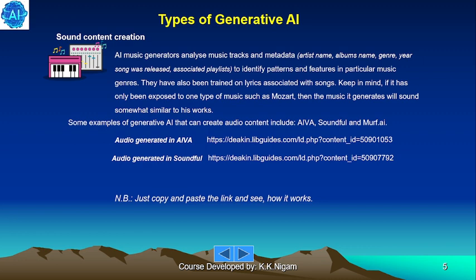Sound content creation. AI music generators analyze music tracks and metadata such as artist name, album name, genre, and year the song was released, as well as associated playlists to identify patterns and features in particular music genres. They have also been trained on lyrics associated with songs. Keep in mind, if it has been exposed to one type of music such as Mozart, then the music it generates will sound somewhat similar to his works.